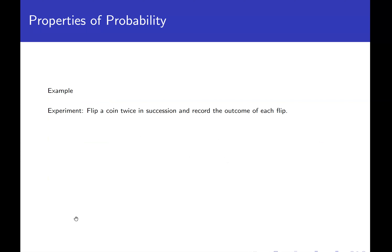Let's do an example to illustrate these definitions. Our experiment is: flip a coin twice and record the outcome of each flip. This is certainly repeatable — you could flip it twice and record the result all day long. It's also random because you can't predict with certainty how a coin will come up. The sample space consists of four outcomes: HH, HT, TH, and TT — all possible results when flipping twice in succession.